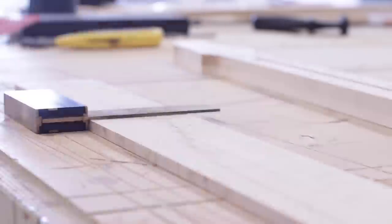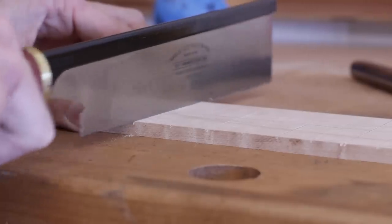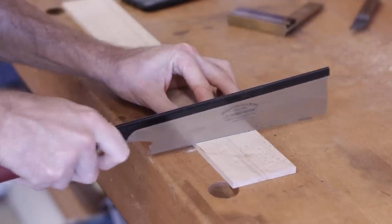With my frets marked, I used a square and a marking knife to establish a line that I could easily start a saw cut in. And at this point, the fret slots don't need to be cut to a certain depth, as I will dial that in after I have radiused the fretboard.